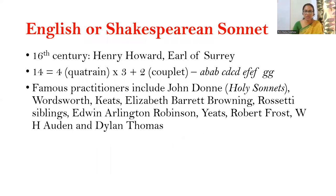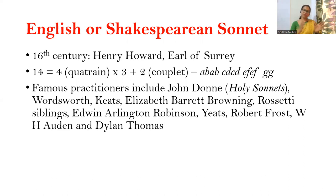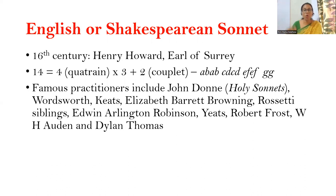Coming to the English or Shakespearean sonnet — most English major students are familiar with Shakespearean sonnets from their school curriculum or graduate degree programs. The English or Shakespearean sonnet was again introduced by Henry Howard, Earl of Surrey, who changed the stanzaic form and rhyme scheme to adapt to the English audience, but it was popularized by William Shakespeare — hence the name Shakespearean sonnet. It was introduced in the 16th century, and the stanzaic division consists of 14 lines made up of quatrains and a couplet.